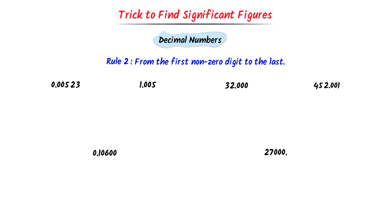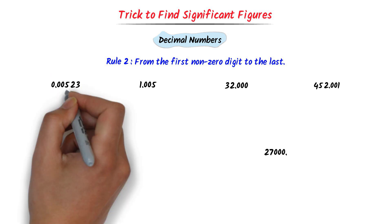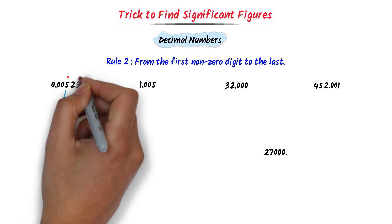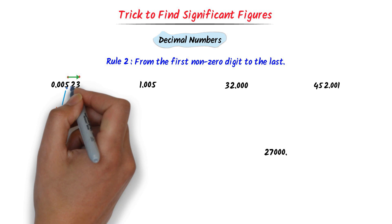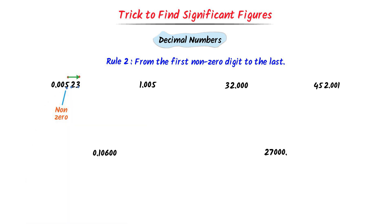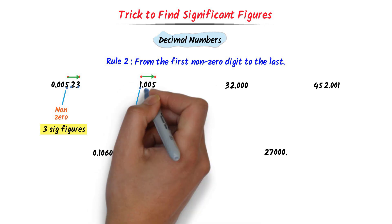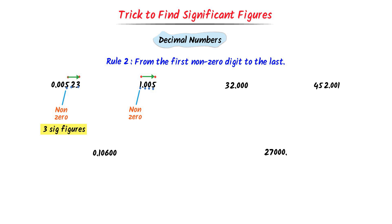For example, consider these numbers. In case of the first number, the first non-zero digit is 5. So I go from 5 to the last: 1, 2, 3. There are 3 digits or 3 significant figures present in this number. In case of the second number, the first non-zero digit is 1. So I go from 1 to the last: 1, 2, 3, 4. There are 4 digits or 4 significant figures present in this number.